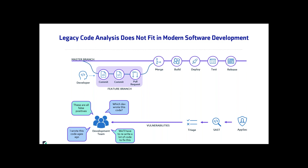Developer team productivity is definitely hit. First you have to figure out who wrote the code, then figure out if the vulnerability is real, and even if it is real, figure out how to fix it — all on top of what developers are already tasked with, which is developing features and writing new code. This is taking them off track and making them less productive.